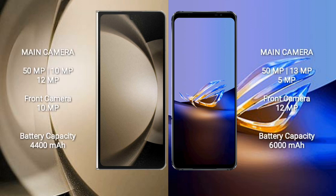The Samsung Galaxy Z Fold 5 has a rear triple camera setup: 50 megapixels plus 10 megapixels plus 12 megapixels, and a 10-megapixel front camera. The Asus ROG Phone 6D Ultimate also has a rear triple camera setup: 50 megapixels plus 13 megapixels plus 5 megapixels, and a 12-megapixel front camera.